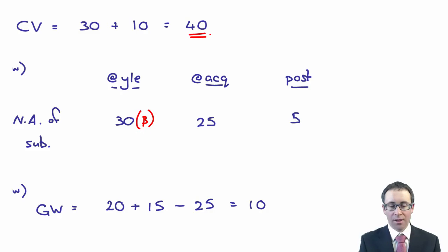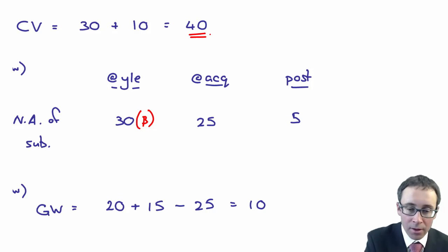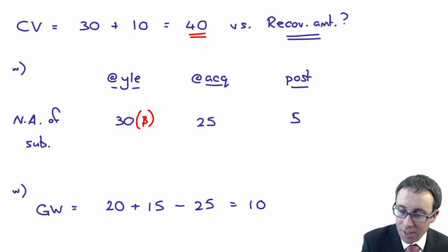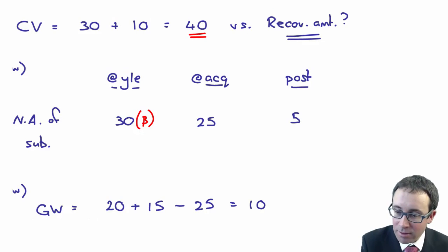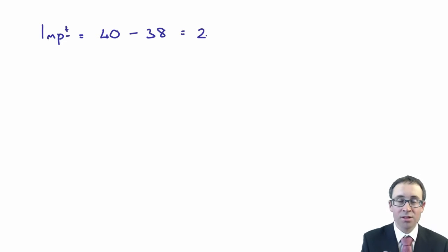The carrying value of £40 million is the smallest group of assets that generate profits and revenues independently of everything else. We now compare this to the recoverable amount. The recoverable amount is the higher of value in use and fair value less cost to sell — the value in use was £38 million and the fair value less cost to sell was £36 million, so the recoverable amount is £38 million. Since the carrying value of £40 million is greater than the recoverable amount of £38 million, there is an impairment.